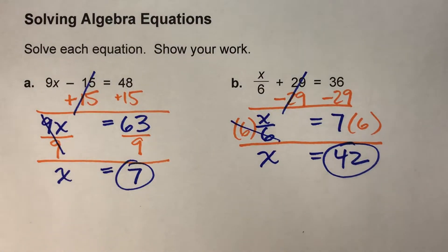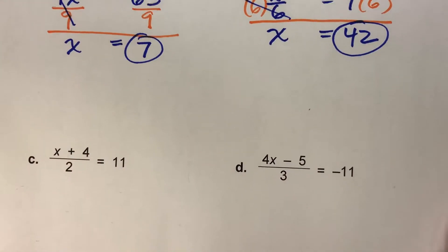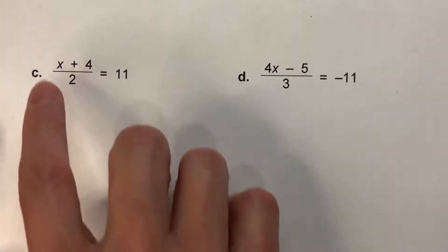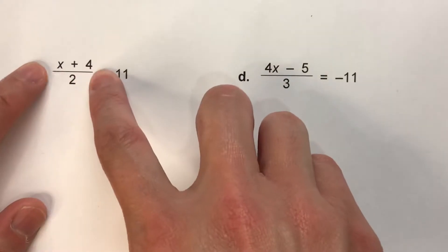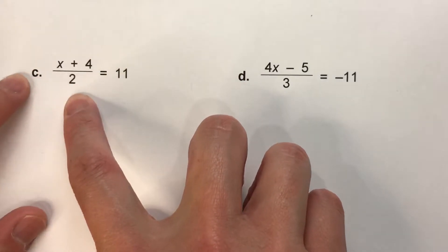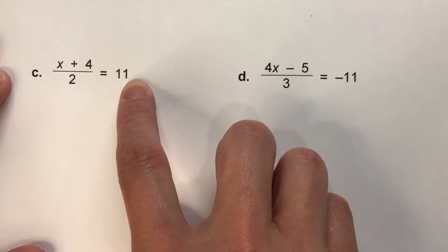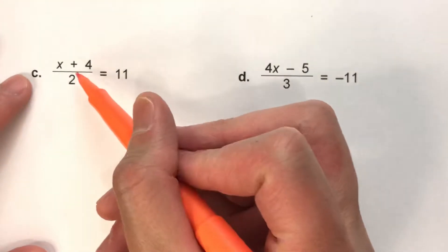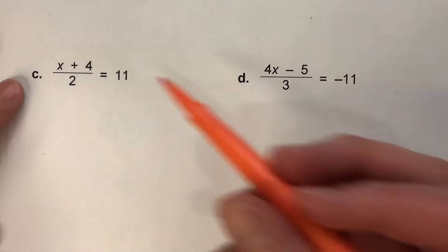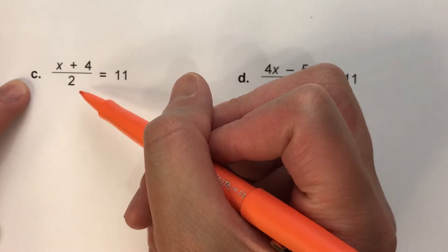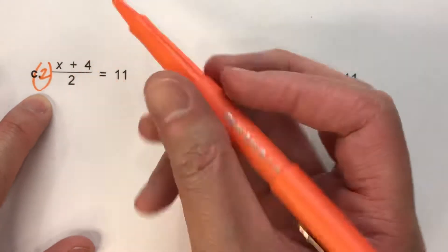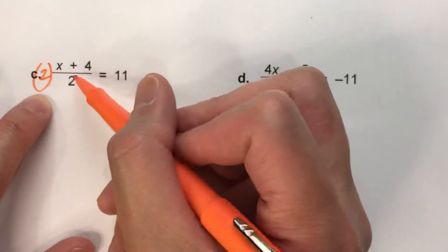Let's do a couple harder ones. This one's a little confusing. It says x plus 4 — so they added 4 to x first, then divided it by 2, and it equaled 11. Notice in this case, the last thing they did was divide by 2, so that's the first thing we need to undo. To undo dividing by 2, we multiply by 2. What I do to one side of the equal sign, I have to do to the other side.